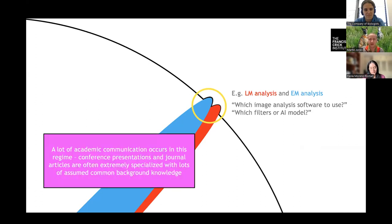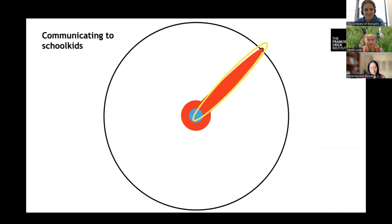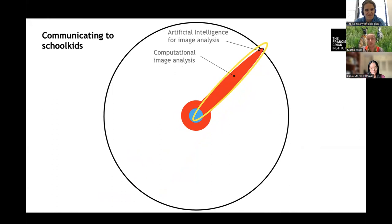A lot of academic communication is in this zone — conferences, journal articles — there's a huge amount of expected background knowledge. When you're talking to school kids, you have to come all the way back, assuming basically no background knowledge. If I want to tell school kids about the fun AI image analysis we're doing, I have to explain what computational image analysis is, what a scientific image is, what an image is — and at primary school level, basic measurement is what you come right back to.